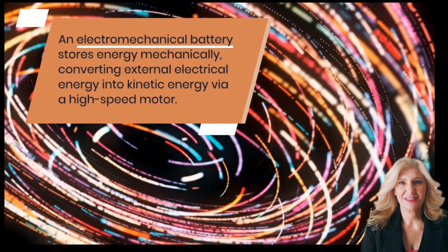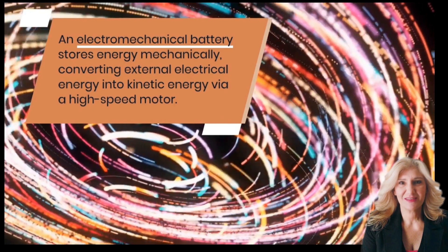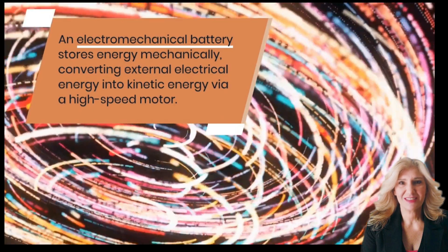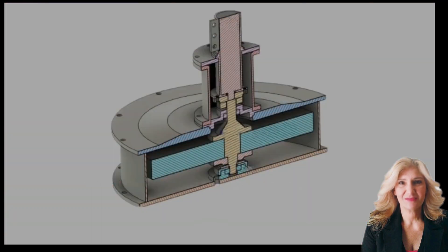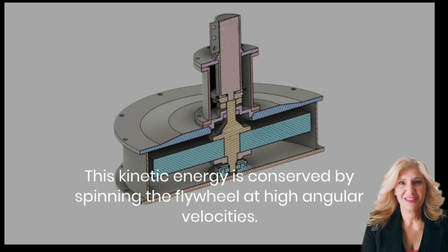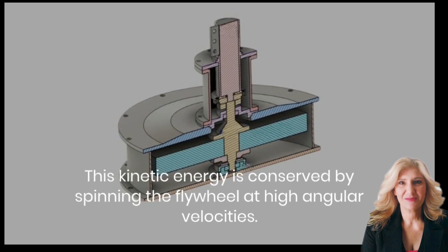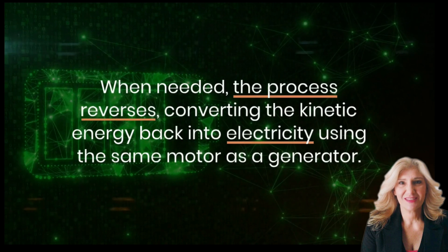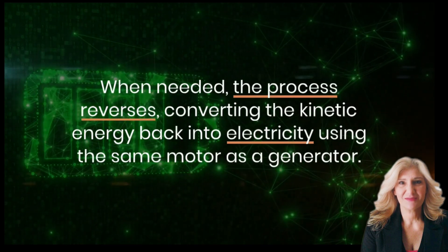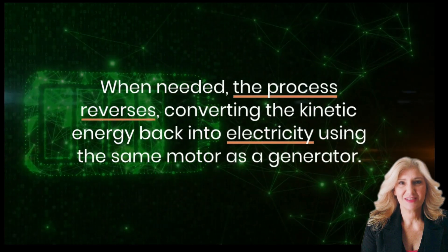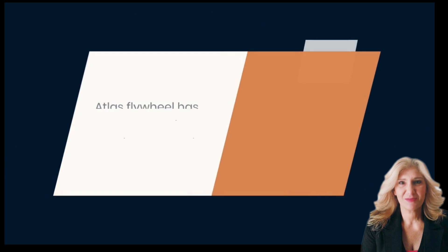An electromechanical battery stores energy mechanically, converting input electrical energy into kinetic energy via a high-speed motor. The kinetic energy is conserved by spinning the flywheel at high angular velocities. When needed, the process reverses, converting the kinetic energy back into electricity using the same motor as a generator.